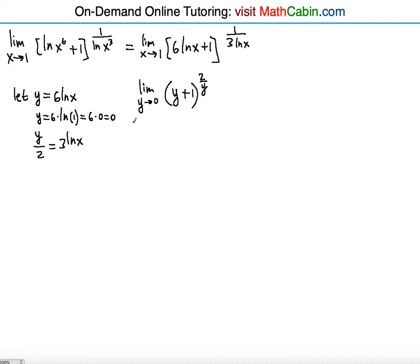Now there's one more substitution — let z equal (y + 1)^(2/y). Why did we start doing substitution? Notice that if we tried to evaluate at x = 1 directly, ln(1) = 0, so the base becomes 1, and 1 over ln(1) is 1 over 0, which is infinity. That gives 1 to the infinity, which is an indeterminate form. So there's no way to evaluate directly. The same issue persists even after the first rewrite — it's still 1 to the infinity, which is indeterminate.